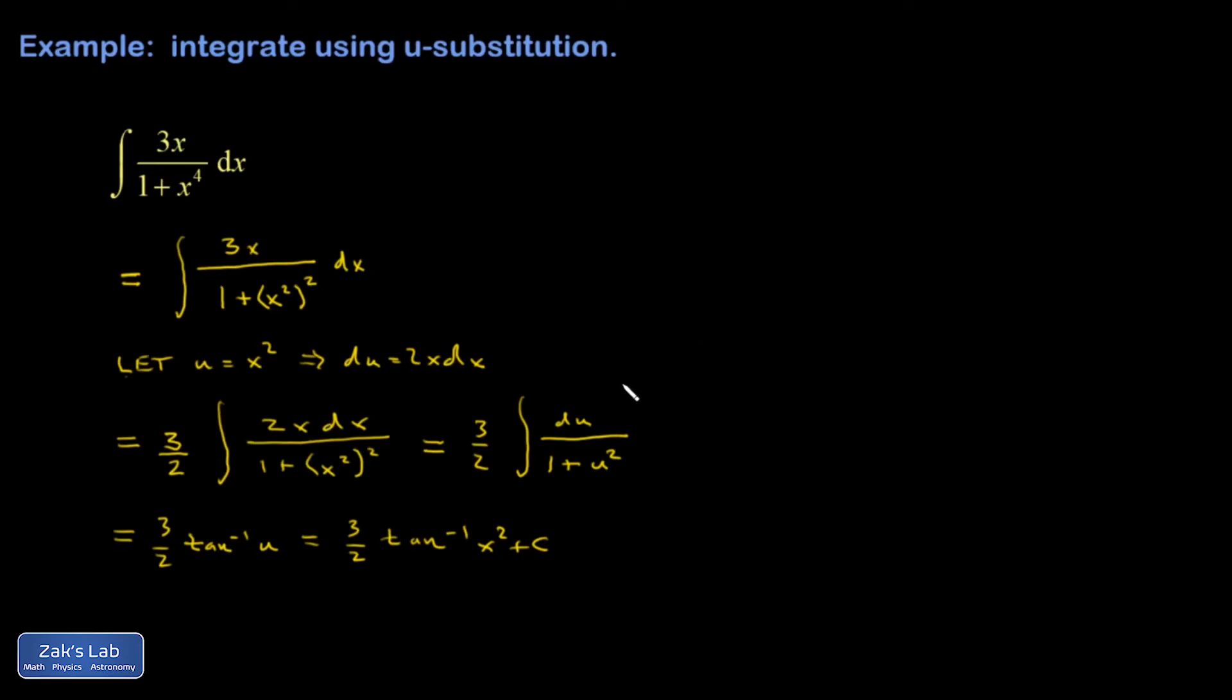The informal solution basically traces these steps. But my perspective is more that I'm just trying to recognize the chain rule backwards. So I have an integral of 3x over 1 plus x squared squared dx. And I recognize that basic functional form that's related to the inverse tangent function.